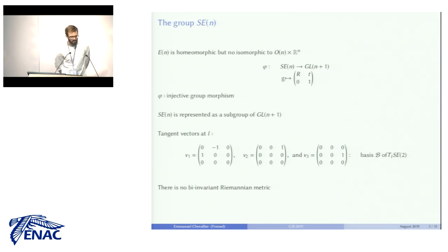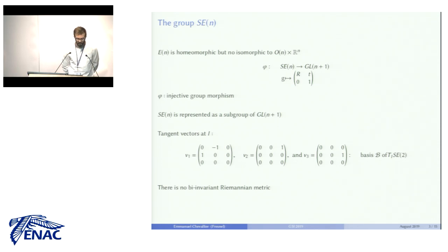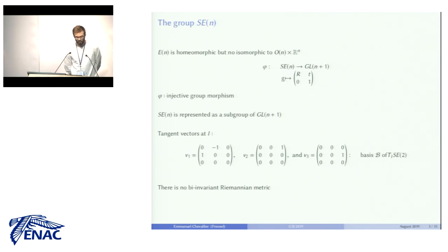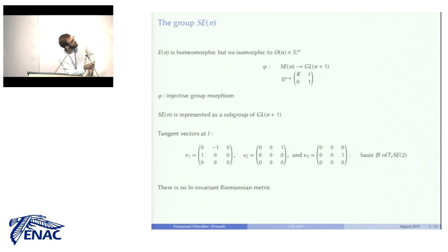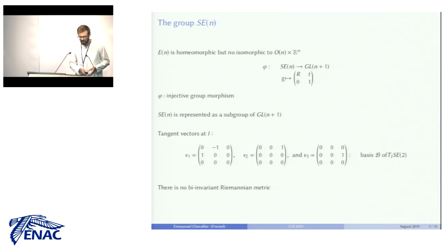We must note that this homeomorphism between rigid motions and the product O(n) × R^n is not a group isomorphism to the direct product group O(n) × R^n, but rather a group isomorphism to the semi-direct product of O(n) and R^n. We can embed rigid motions in a matrix group using an embedding φ into the (n+1) × (n+1) invertible matrices, enabling us to manipulate the group of rigid motions as a subgroup of a general linear group.